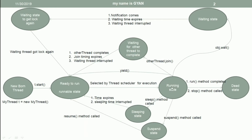When we call the yield method on a thread in running state, the thread will again go to the ready to run state. The yield method can be ignored by the thread scheduler — it is just a hint that the thread is ready to pause its execution and go from the running state to the runnable state. If this hint is accepted by the thread scheduler, then the scheduler will take the thread from the running state to the ready to run state.